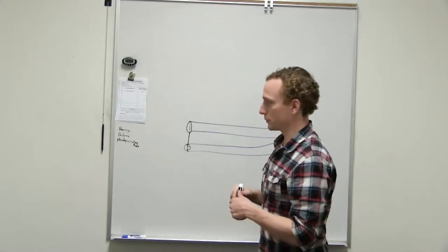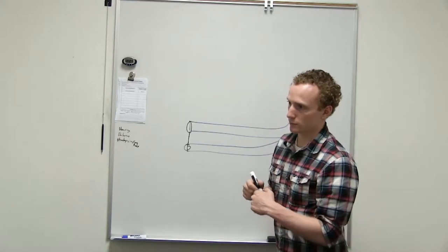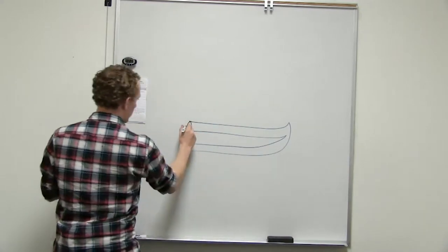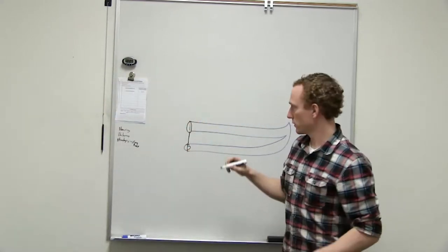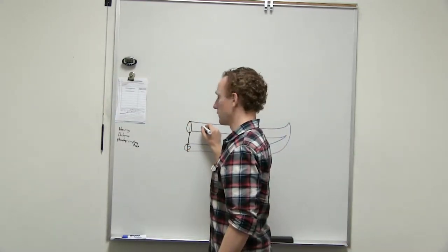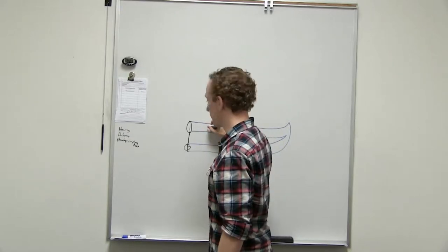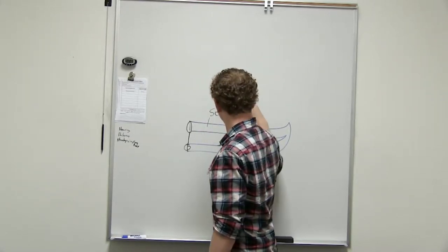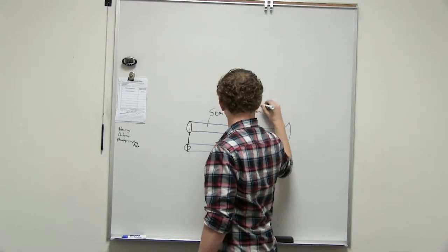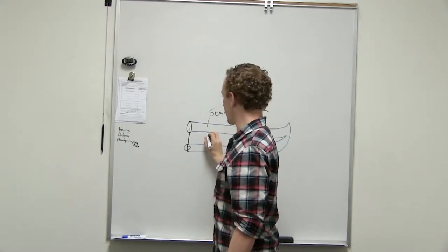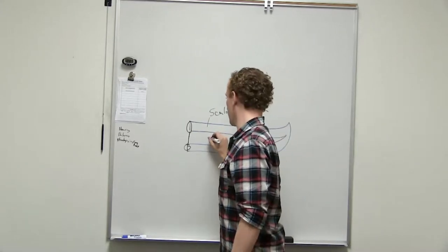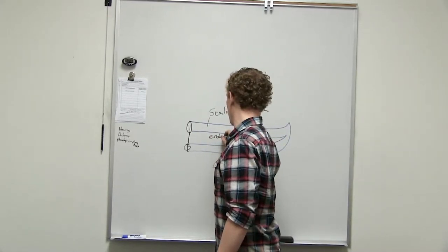Malleus, incus, stapes. And so the foot plate of the stapes is going to vibrate the perilymph, or it's going to go through the oval window first. So, vibrates the oval window. Perilymph in the scala vestibuli, which is going to vibrate the vestibular membrane. Vibrates the vestibular membrane and then vibrates the endolymph. And that's usually as far as I get.